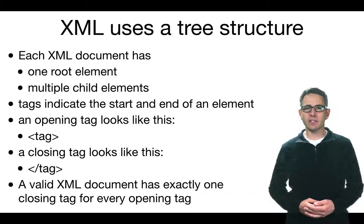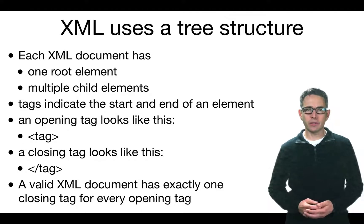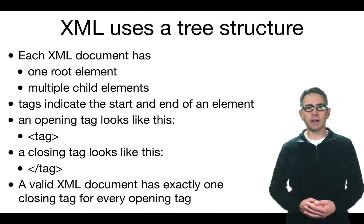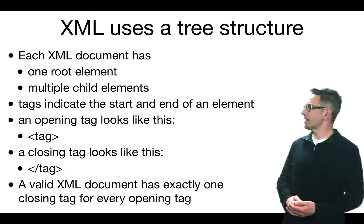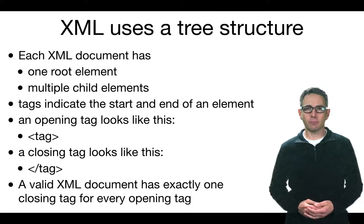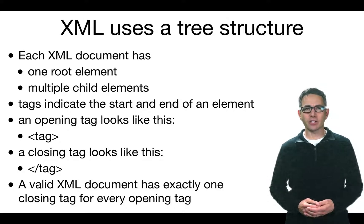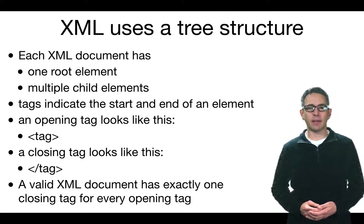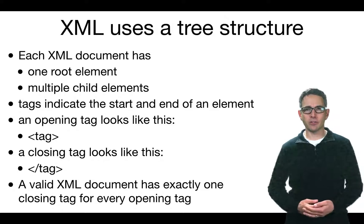Because of the way XML uses tags, it produces something that can be interpreted as a tree structure. Every XML document has one root and can have multiple child elements and sub-child elements. Tags always form the beginning and end of an element: an opening tag is a word embedded within angle brackets, and the closing tag has a slash in front of the name. Every valid XML document has exactly one closing tag for every opening tag — they always come in pairs.